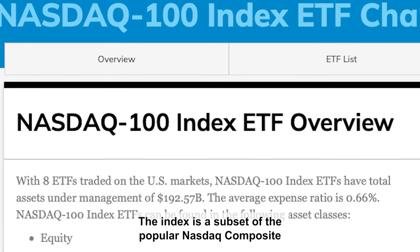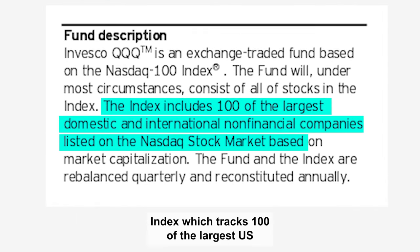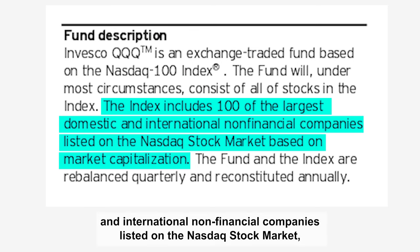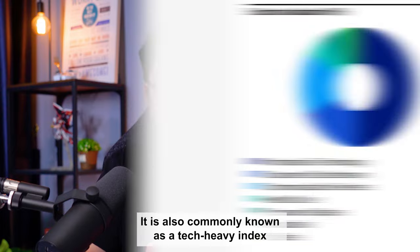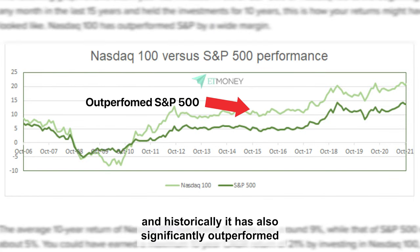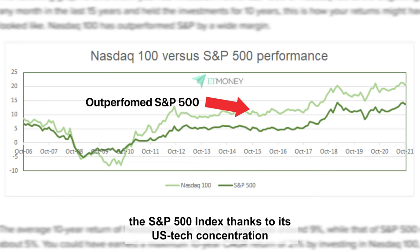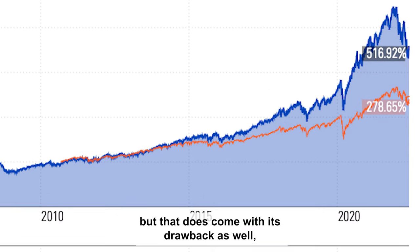The index is a subset of the popular NASDAQ Composite Index, which tracks hundreds of the largest US and international non-financial companies listed on the NASDAQ stock market, such as Apple, Microsoft, Google, Tesla, and more. It is commonly known as a tech-heavy index, with over 50% of its weightage dominated by technology companies, and historically it has significantly outperformed the S&P 500 Index thanks to its US tech concentration — but that does come with drawbacks as well.